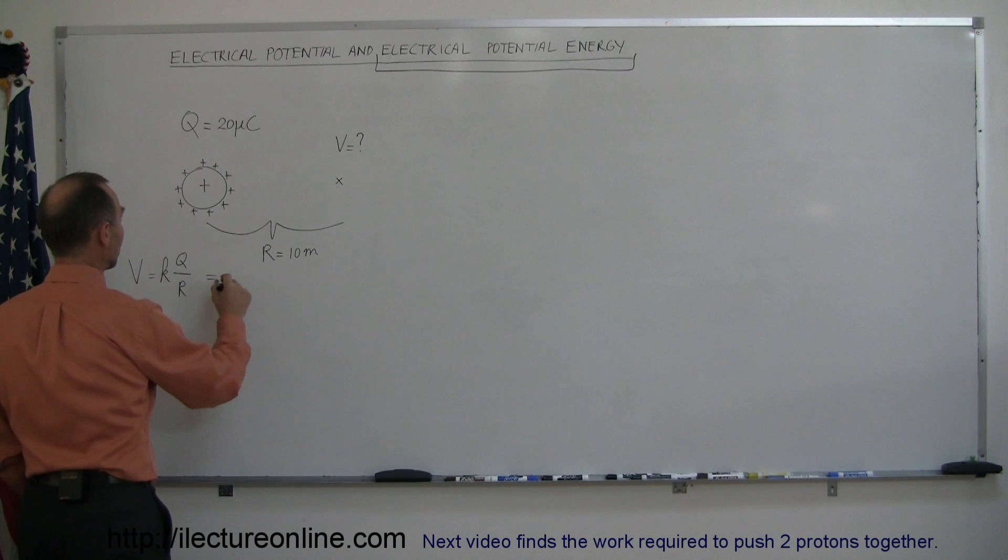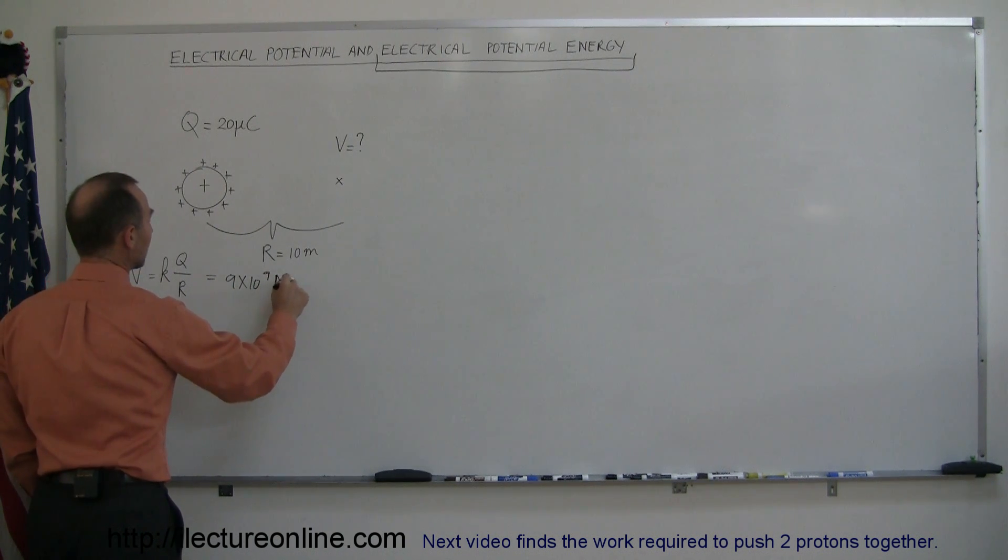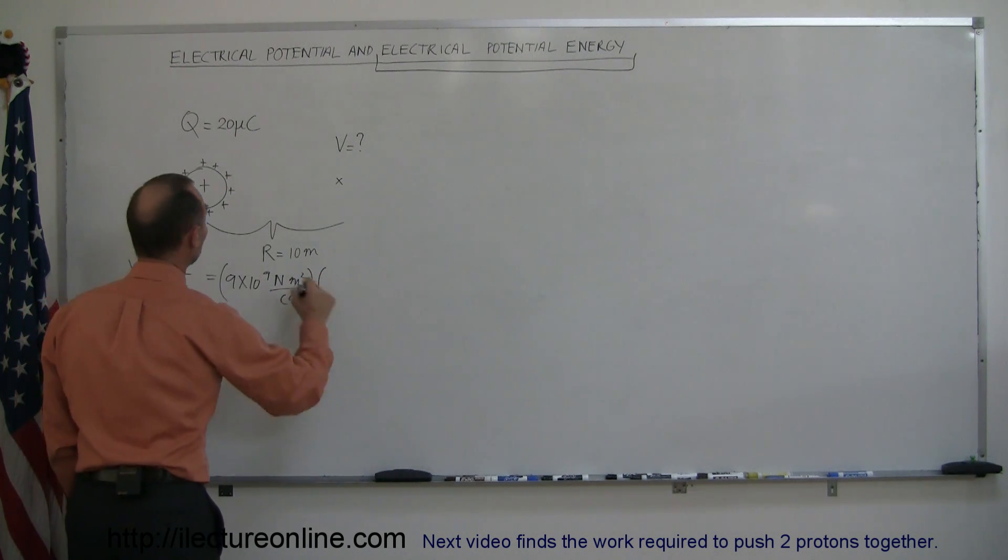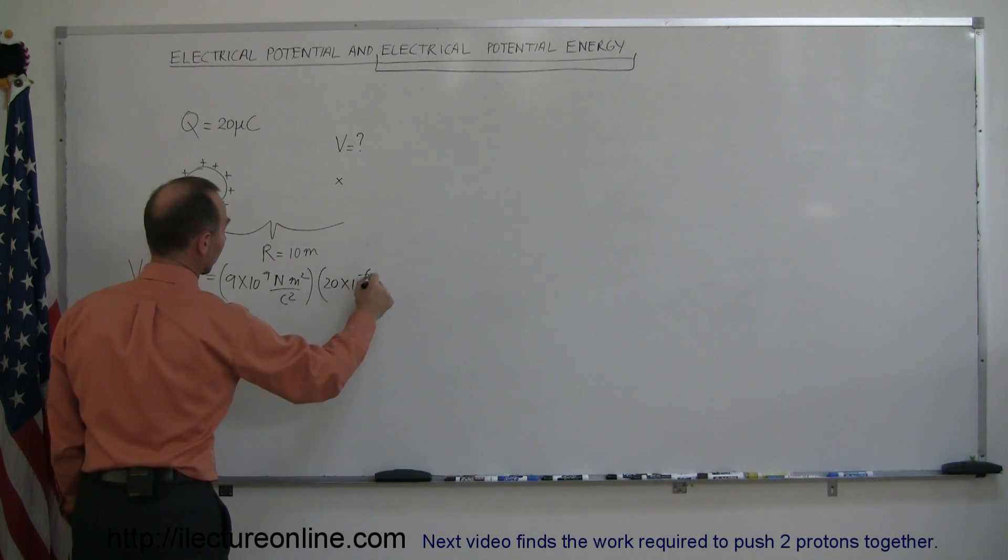That's equal to K, which is 9 times 10 to the 9th newtons meters squared per coulomb squared times charge, charge is 20 times 10 to the minus 6 coulombs, and the distance is 10 meters.